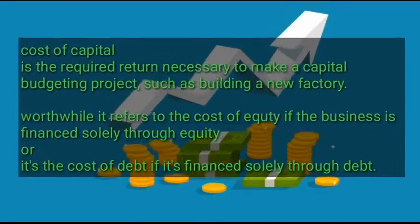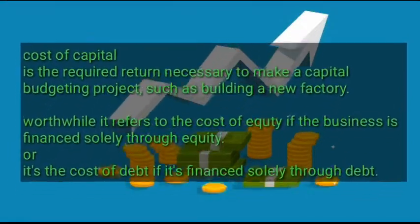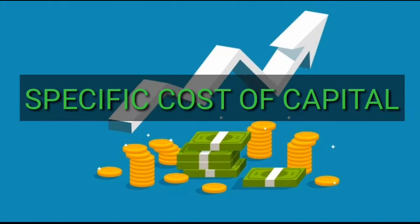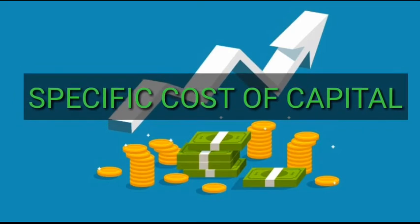It refers to the cost of equity if the business is financed through equity, or it refers to the cost of debt if a business is financed through debt. The cost of equity is dividends — the return for equity is dividends. Under equity we have ordinary shares or common stock, preference shares (both redeemable and irredeemable), and retained earnings or reserves. The cost of debt — the return to debt is interest — and under that we have loans and bonds, both redeemable and irredeemable.